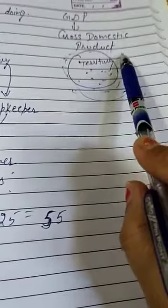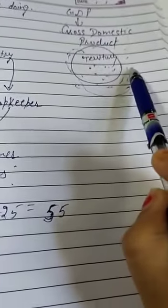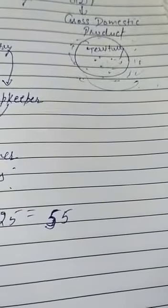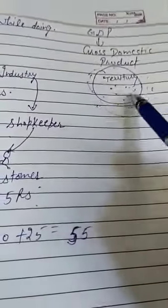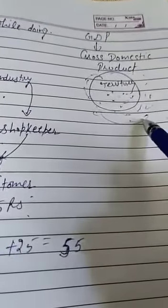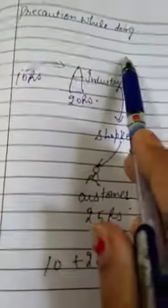If you know the goods and things, how will we know the total value? How much has come? We need to know what is the total of primary, how much is secondary, how much is tertiary. For this, we do precautions while calculating.